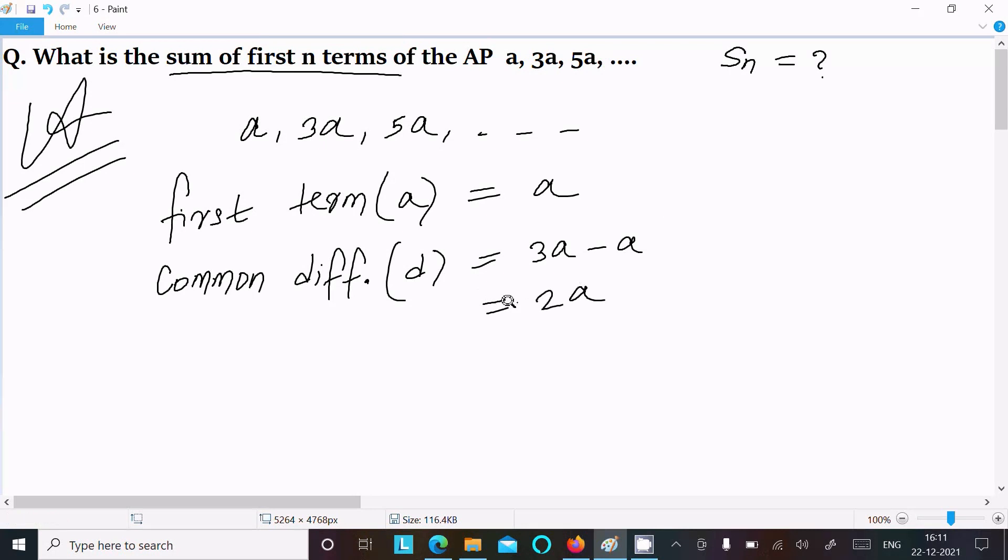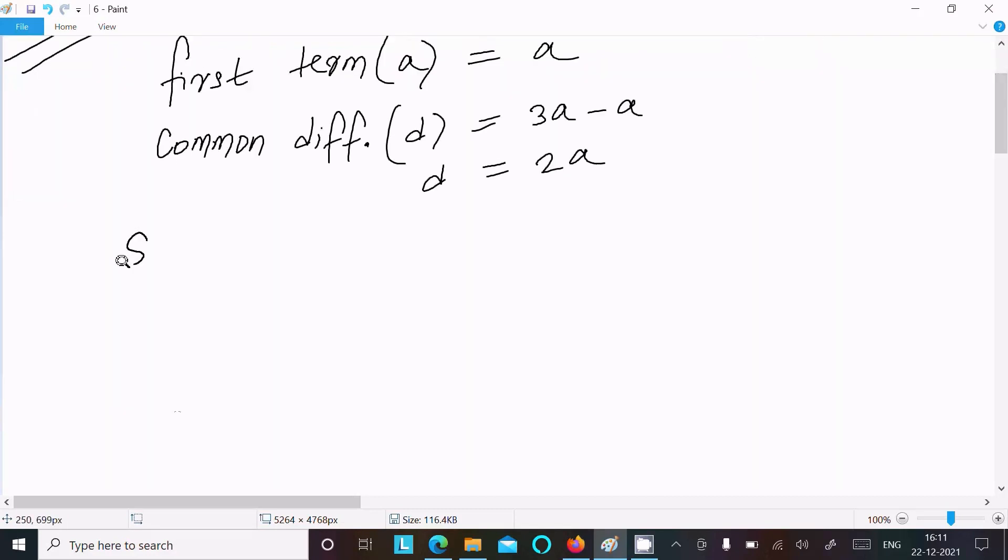After that, the sum formula that I'm going to write: Sn = n/2 [2a + (n-1)d]. So here n we don't know, so n/2, a is the first term.